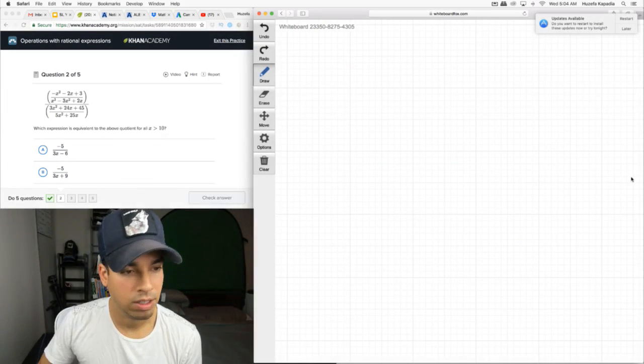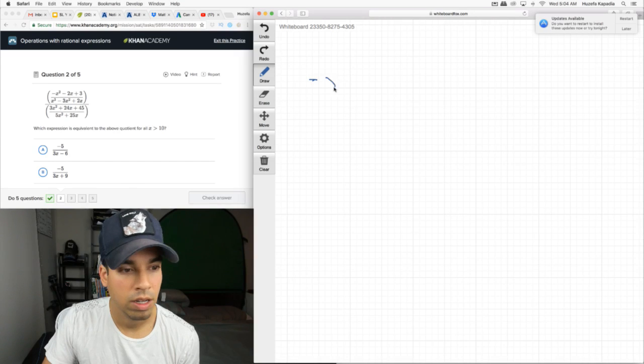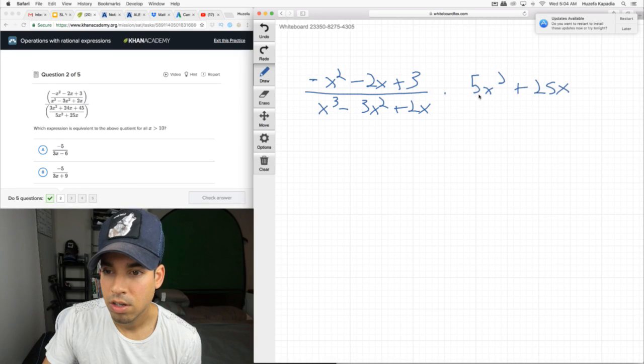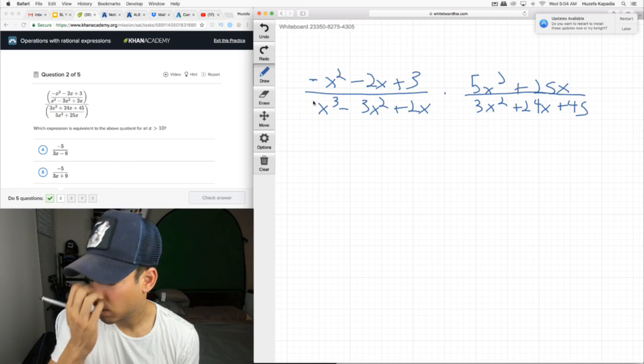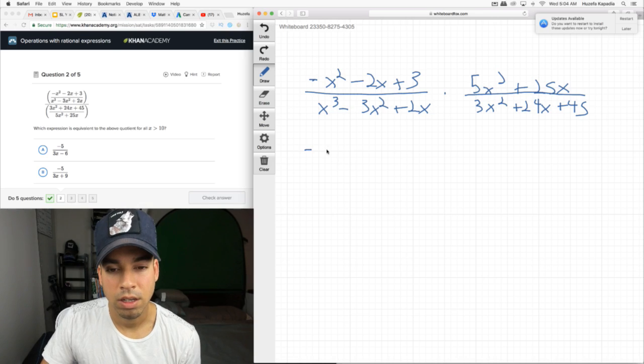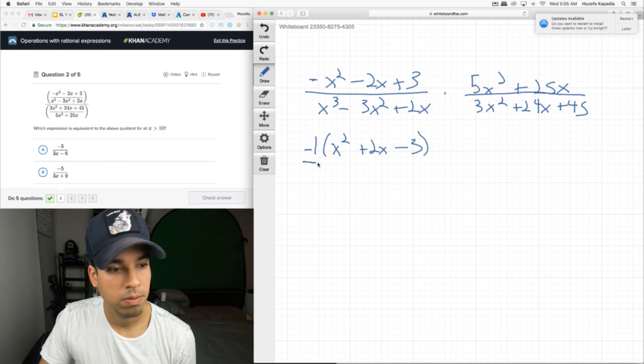Again, another brutal one just like this. So, first of all, I'm just going to convert this straight away to the multiplication problem. So, it's this top part times the reciprocal of this bottom part. So, it's negative X squared minus 2X plus 3 over X cubed minus 3X squared plus 2X times, make sure to flip it, 5X squared goes on top, plus 25X over 3X squared plus 24X plus 45. Okay. So, this top part becomes, and I hate that negative. That's always annoying on that first term.